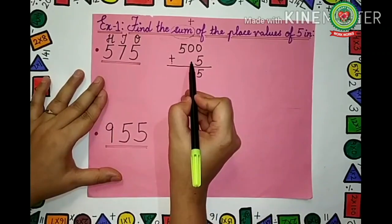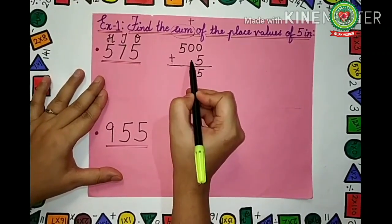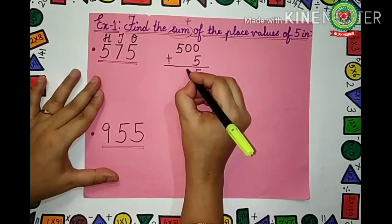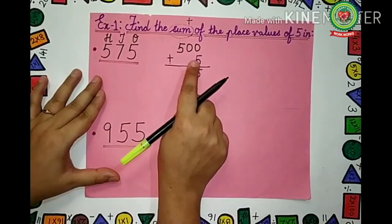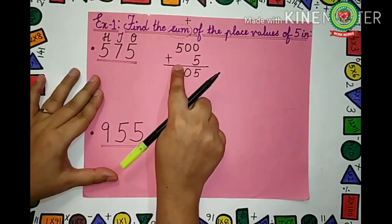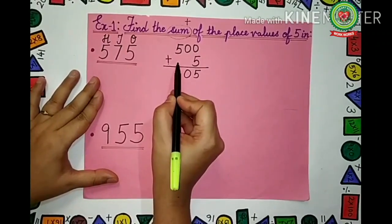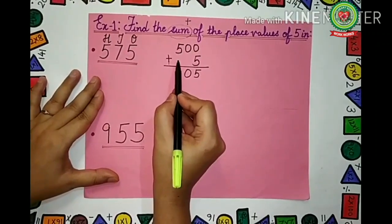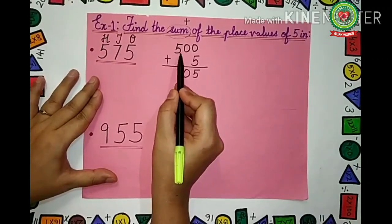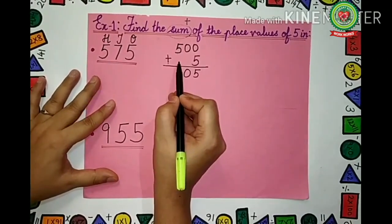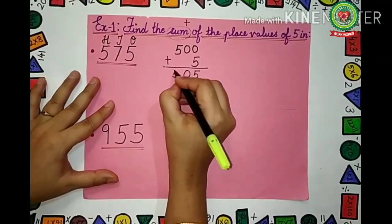Nothing is there in the next column — that means it is 0. So 0 plus 0 is 0. Moving to the next digit: 5 is there and nothing is there below it — that means 5 plus 0. Nothing means 0, so 5 plus 0 is 5. So we will write down 5.